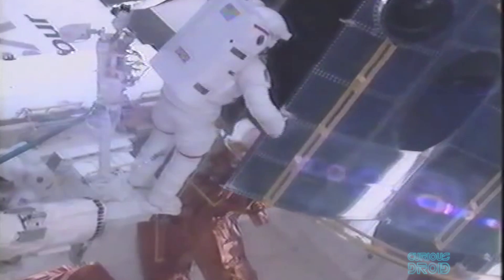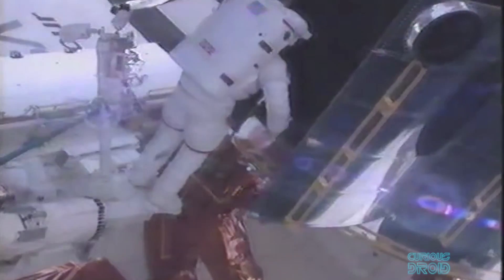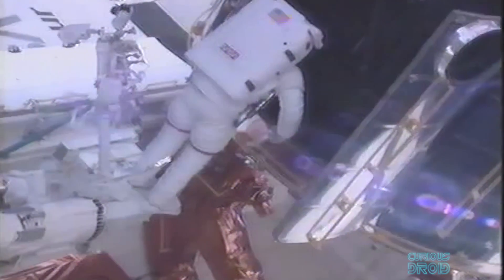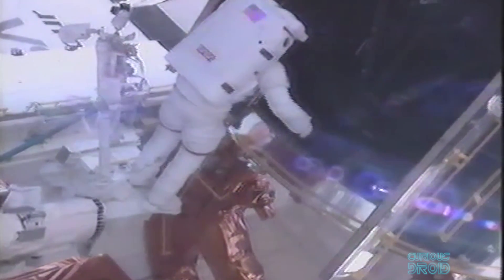So in 1993, an ambitious and expensive shuttle mission with five spacewalks managed to install corrective optics on the secondary mirror to fix the problem.